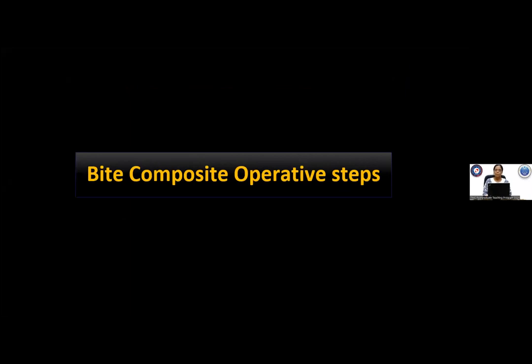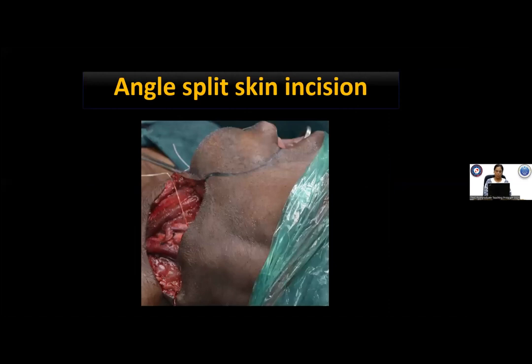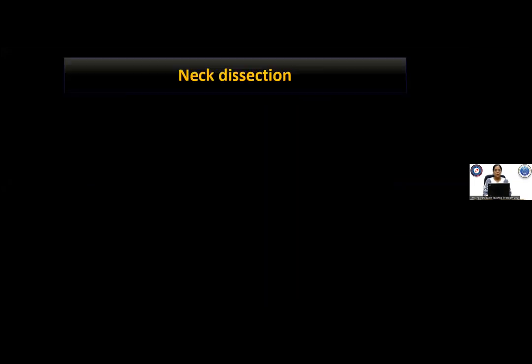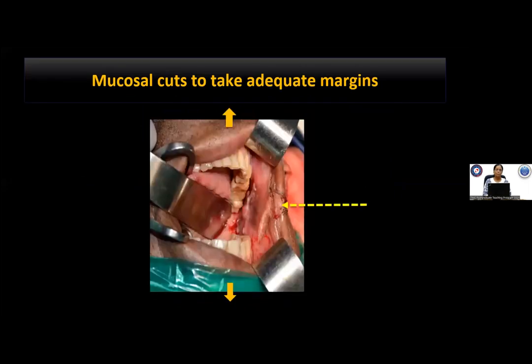Coming to the bite composite operative steps: careful assessment of the intraoral disease is important. In the case being discussed, an angle split incision was taken. A level 1 to 5 neck dissection was performed before starting the primary because of involved neck nodes. Mucosal cuts were taken at 1 cm from the primary tumor after careful inspection and digital palpation, with the incision taken up to the depth of subcutaneous tissue, using the buccinator muscle as the soft tissue margin.